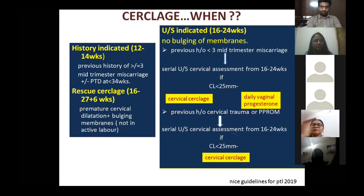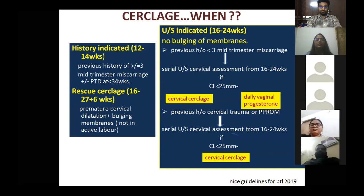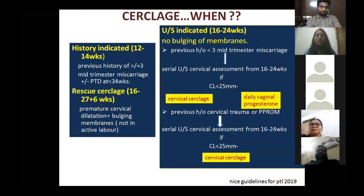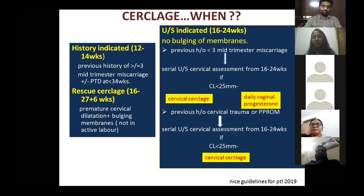For cerclage: history-indicated cerclage is done at 12–14 weeks when there is a history of three or more mid-trimester miscarriages or preterm delivery at less than 34 weeks. Rescue cerclage is performed from 16–28 weeks if there is premature cervical dilatation with bulging membranes, provided dilatation is less than three centimeters — beyond that it would be established labor.